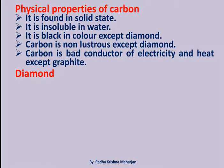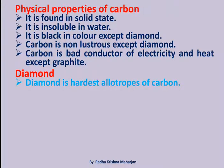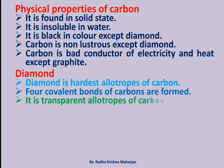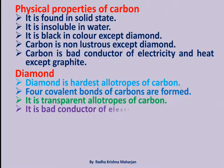Diamond: Diamond is the hardest allotrope of carbon. Four covalent bonds of carbon are formed. It is the transparent allotrope of carbon. It is a bad conductor of electricity and heat.